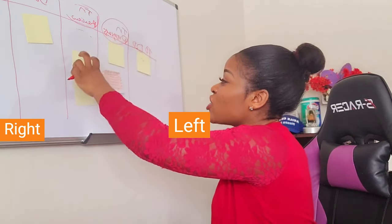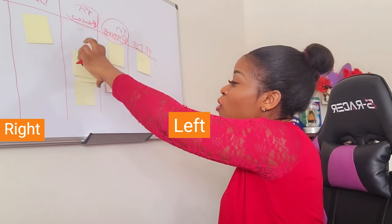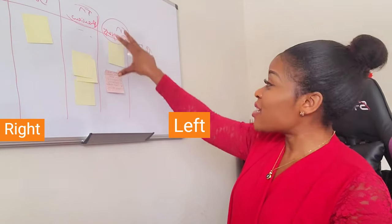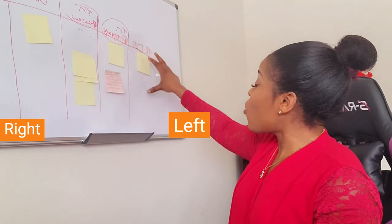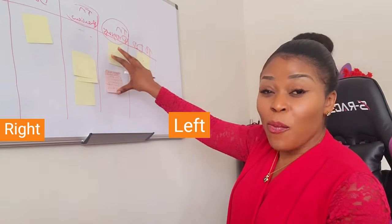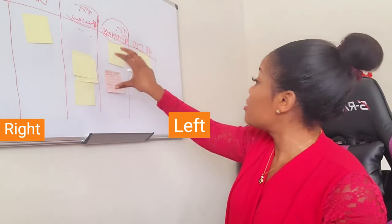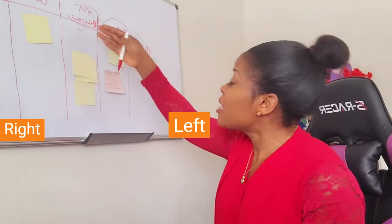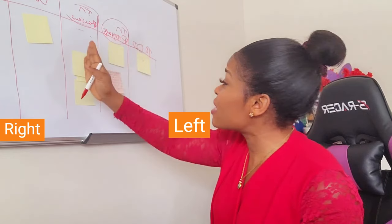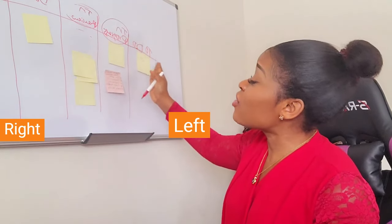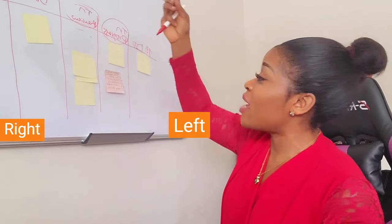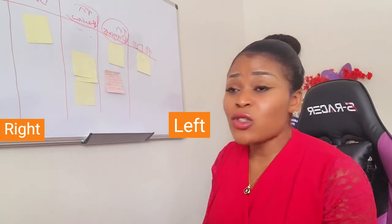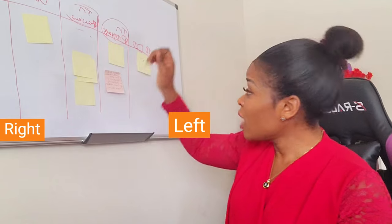My focus is to ensure we direct our energy to closing out work items in the In Review column, and then closing out work items in the In Progress column, instead of picking more new stories and opening them in In Progress. If I see we're beginning to have too many things open based on our WIP limits, let's discuss them and address them — rather than just talking randomly about what I did yesterday and what I plan to do today.